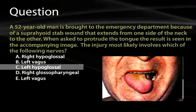With cranial nerve 12 denervation, you end up licking your lesion, which causes the tongue to curl to the side that is injured. If you were injuring the right hypoglossal, it would go to the right side. The left vagus would require cutting the carotid sheath, and the right glossopharyngeal is too deep to be cut from anterior surface wounds in the neck.